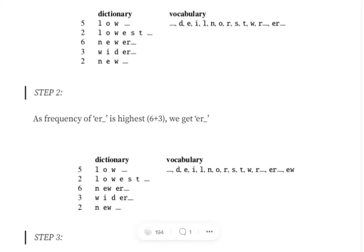Next step, we are merging 'r underscore' with 'er'. You can see 'er underscore' or 'er r underscore' occurs nine times in the dataset. You're getting my point, right?